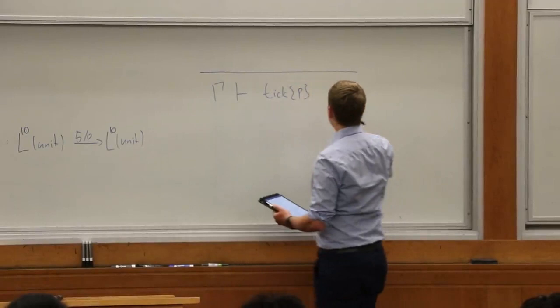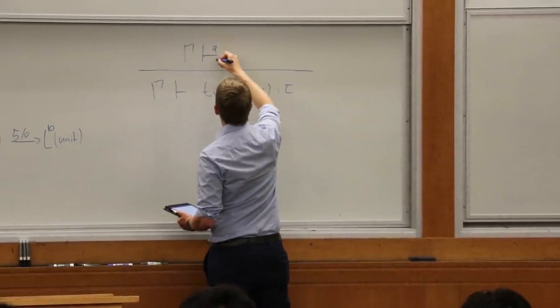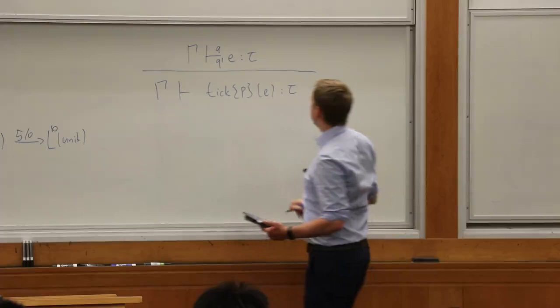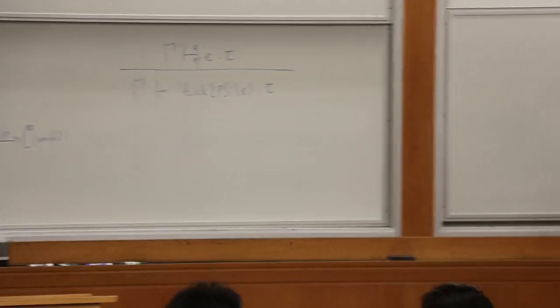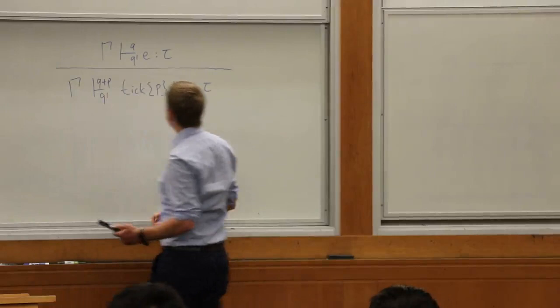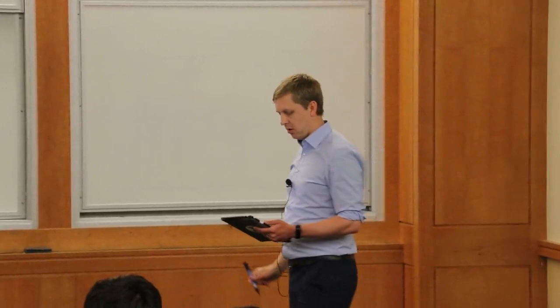The rule for tick: let's say we do tick(P) again — P could be negative. We might have some cost in E, so we have some potential Q here, used to pay for the evaluation of E, and we get some remaining potential. But we also have to pay for the tick itself. So we need a little more at the beginning, namely P. P is consumed as the cost of the tick, and Q is the remaining potential used to pay for E. The context passes all potential through.